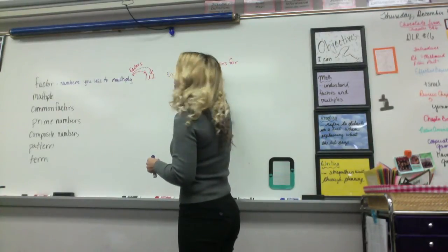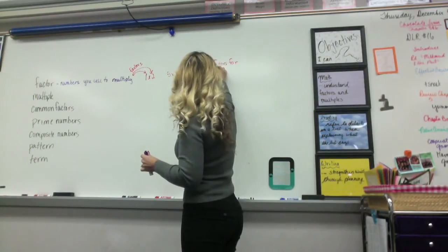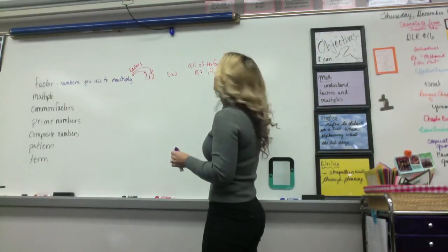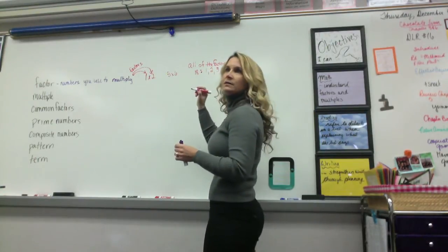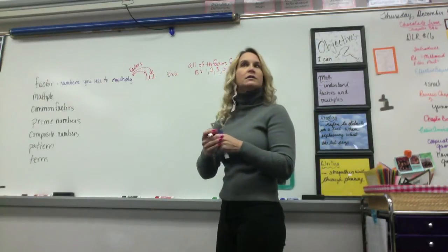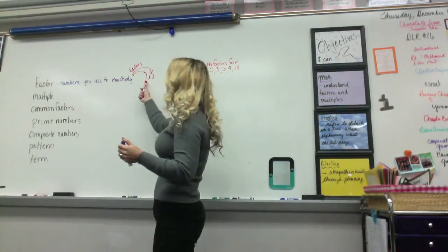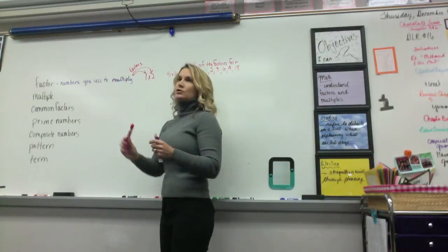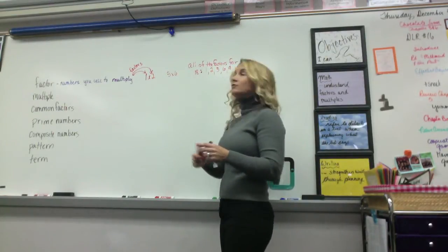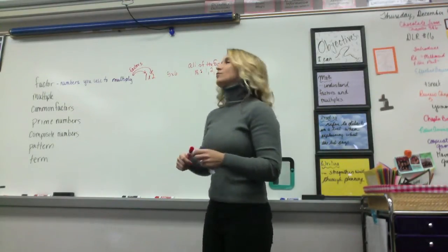Give me one factor of 18. One. What's the next? Two. Three. Six. And the next one? Nine. And then? Four. Nope, there's no four. Eighteen. Okay. While we know that when you multiply two numbers, the two numbers you're multiplying are called the factors. In chapter five, this is how we're using the word factors — finding all of the factors for a number. In this case it would be one, two, three, six, nine, and eighteen.